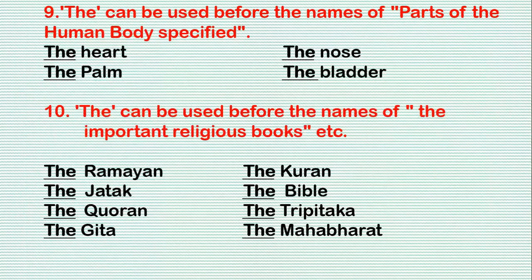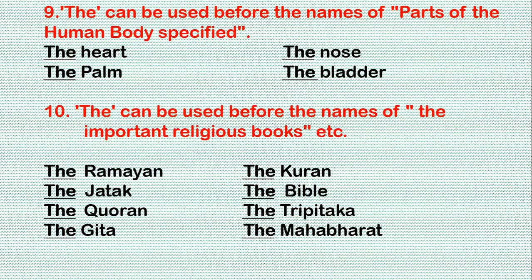Rule 10: 'The' can be used before the names of important religious books. For example: the Ramayana, the Quran, the Jatak, the Bible, the Tripitaka, the Gita, the Mahabharata, etc.